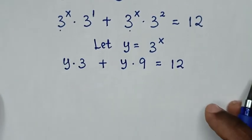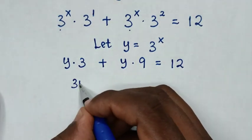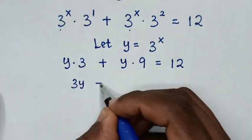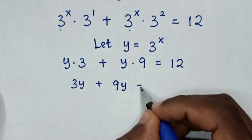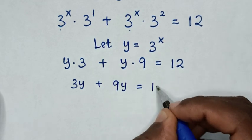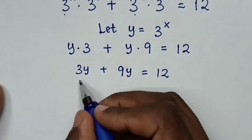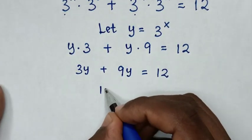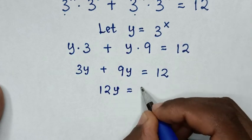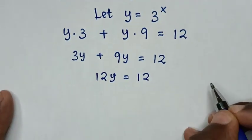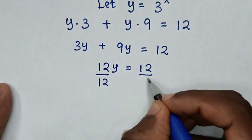In the next step it will be y times 3 is 3y, plus y times 9 is 9y, is equal to 12. Then in the next step, 3y plus 9y is 12y, is equal to 12. Then we divide by 12 on both sides.